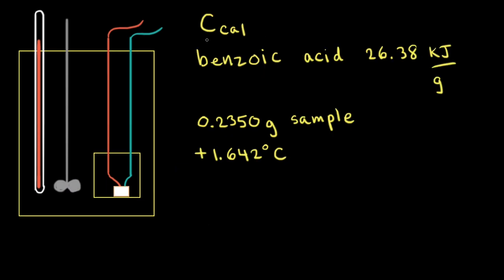To do a constant volume calorimetry problem, we need to know the heat capacity of the calorimeter, symbolized by C with a subscript cal. To find the heat capacity of the calorimeter, we need to combust something that we know the exact amount of heat for. For example, if you combust exactly one gram of benzoic acid, you'll get 26.38 kilojoules of energy released.